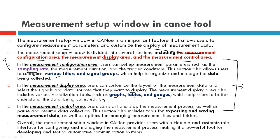These three areas are what you actually use in the measurement setup window. When you read this out, it may seem different, but it is completely within the measurement setup context. This is the contextual knowledge you should have — even with sound hands-on experience, you should be able to deliver it in a well-wrapped way to get good feedback. Overall, the measurement setup window provides a flexible and customizable interface for configuring and managing the measurement process, making it a powerful tool for automotive communication systems.